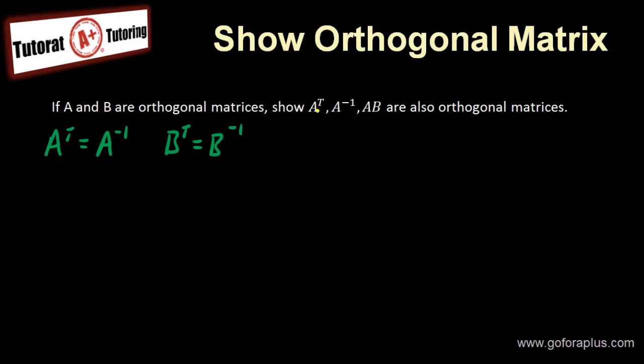Now, what I want to show is A transpose is also an orthogonal matrix. So let's say I have A transpose transpose. I want to show that this is equal to A transpose inverse. So how do I do that?